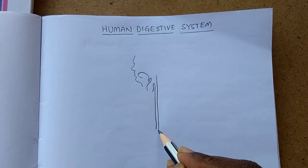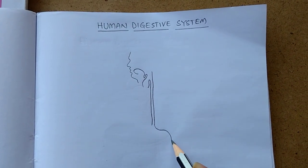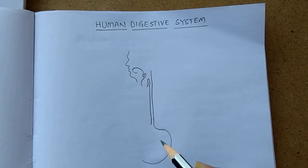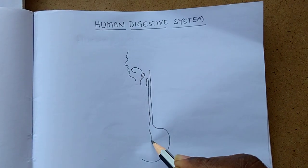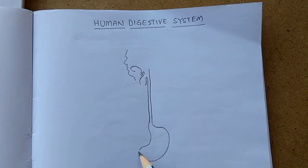Draw two straight lines, and here one bag-like structure is the stomach. From there...